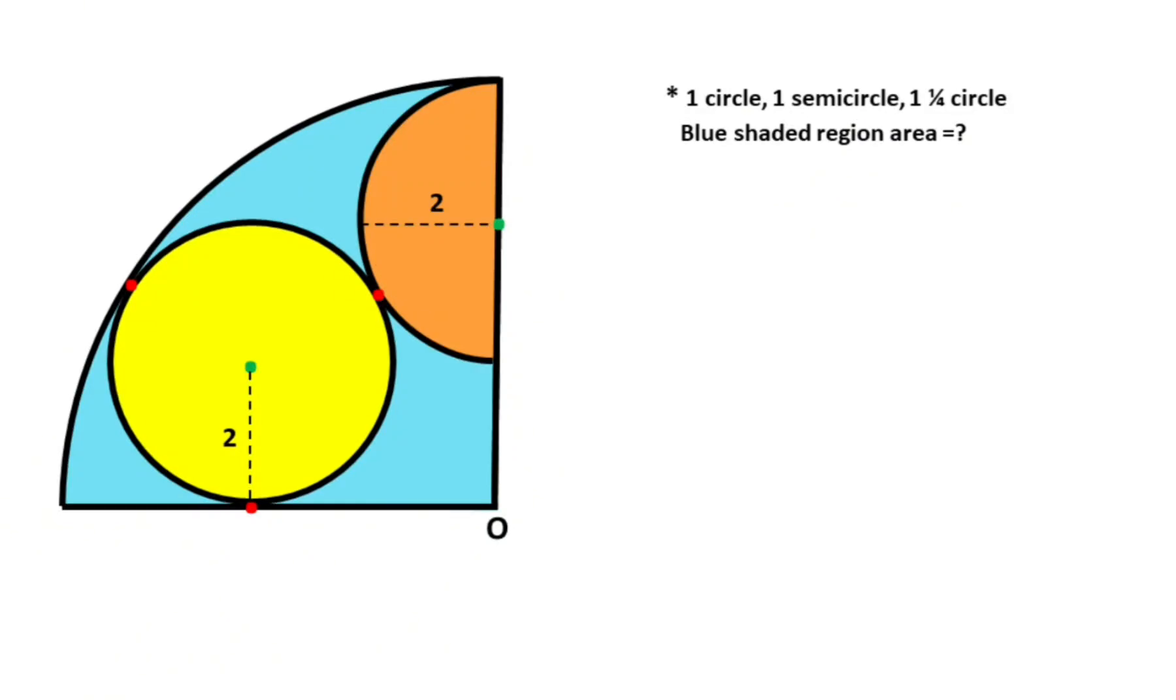Hello everyone, in this video we have one circle, one semicircle, one quarter circle, and point O is given as the center of the quarter circle. These are given as center points and these red points are given as tangent points. The radius of the circle and semicircle is given as two.